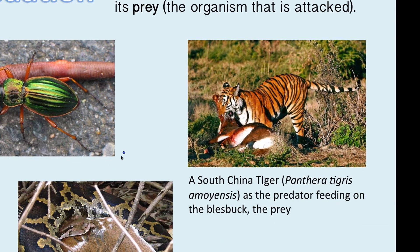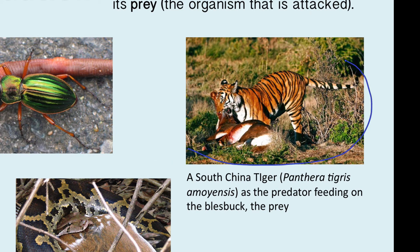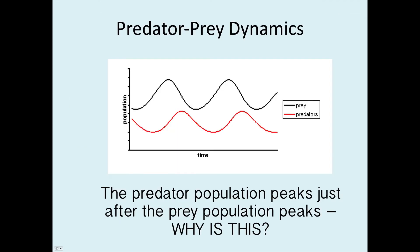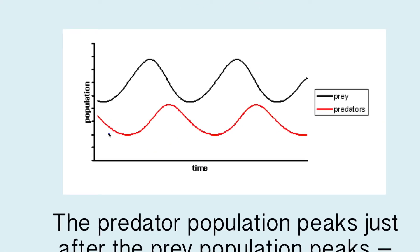I have some visual pictures here. Normally when we think of a predator we think of a tiger feeding on a deer, but there are also other types of predators — insects and snakes, for example. There's something very important about this predator-prey relationship when we look at population growth, called predator-prey dynamics. When we look at the prey population in black and the predator population in red, the prey population peaks at a given time.